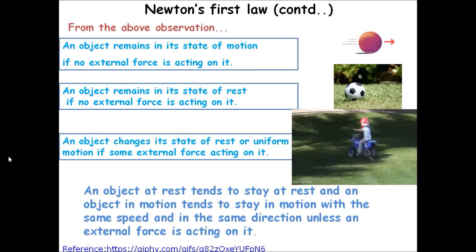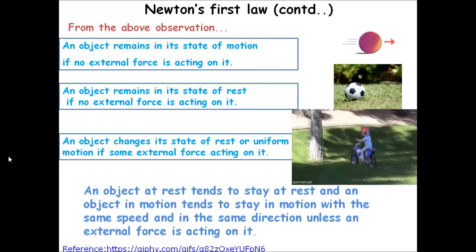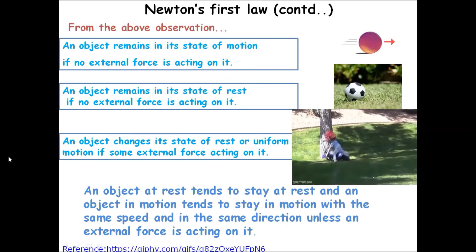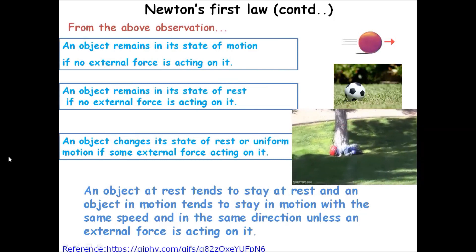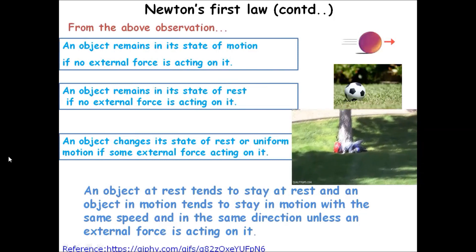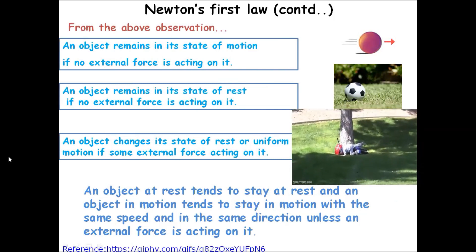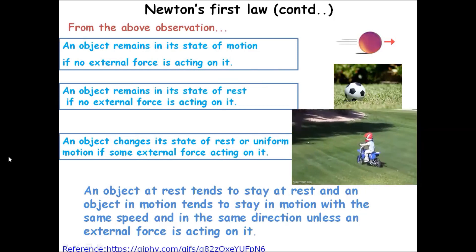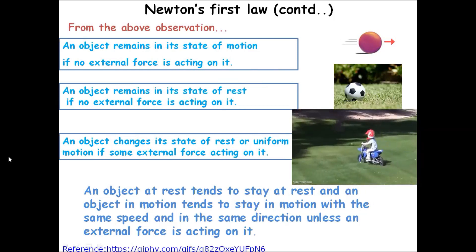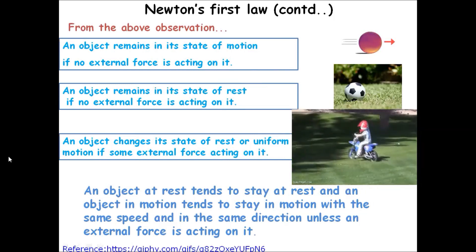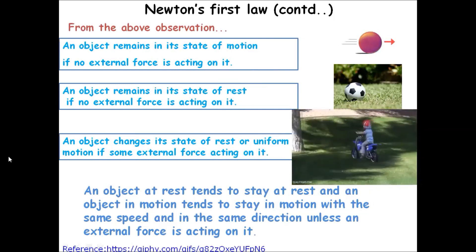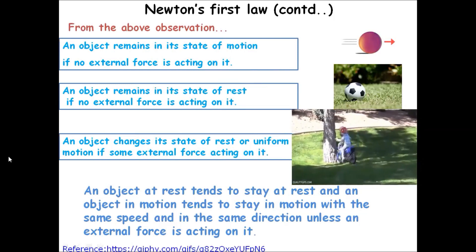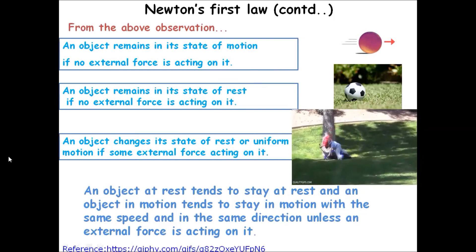From all the observations, we can conclude that an object at rest tends to stay at rest and an object in motion tends to stay in motion with the same speed and in the same direction unless an external force is acting on it.